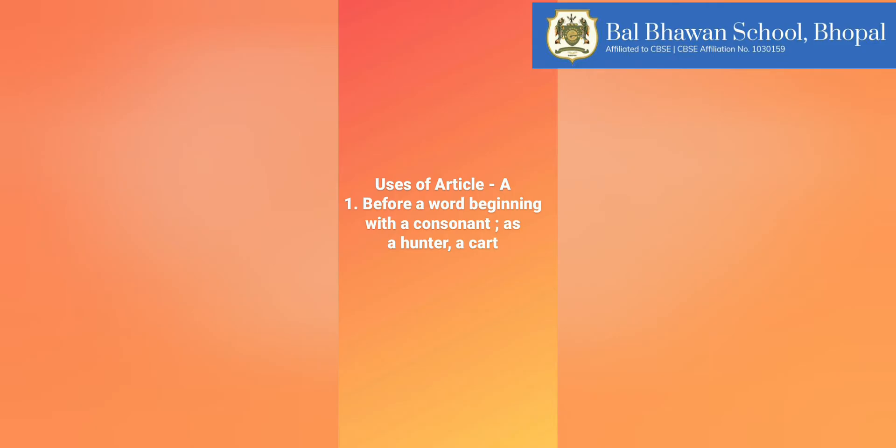Let us revise the uses of article 'a'. Article 'a' is used before a word beginning with a consonant. For example: a kite, a monkey, a cart, a man, a woman, a book.